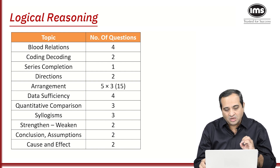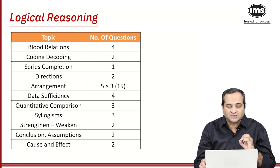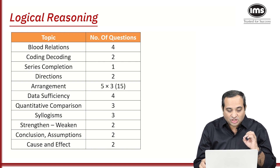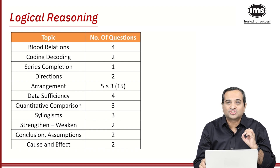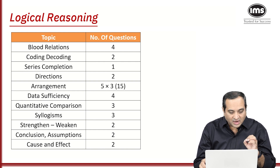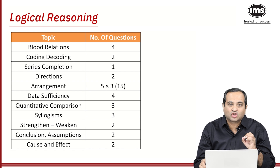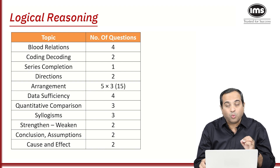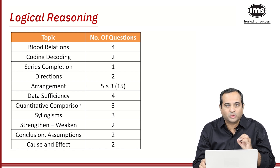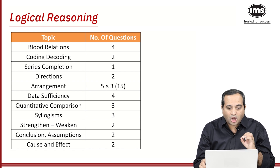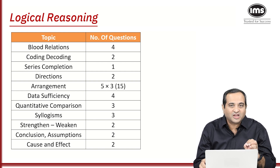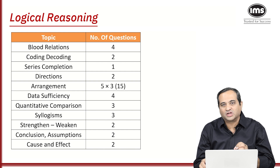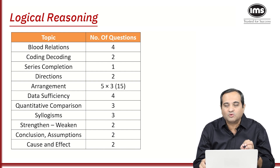Then you get data sufficiency, quantitative comparisons, syllogisms, strengthening-weakening, conclusion-assumption, and cause and effect — these are all verbal reasoning questions. So out of 40 questions in logical reasoning, there are nine questions on verbal reasoning.